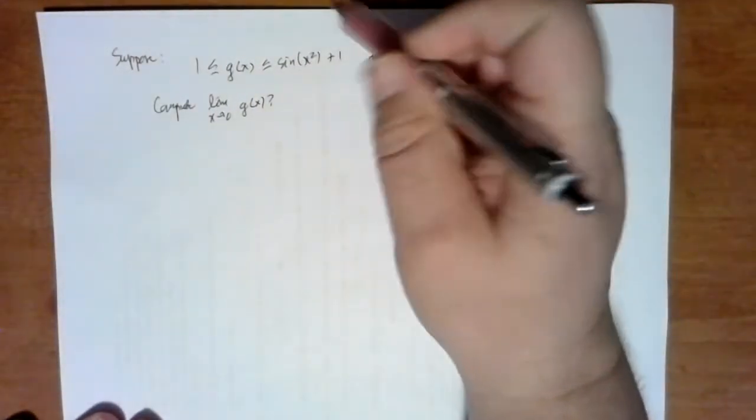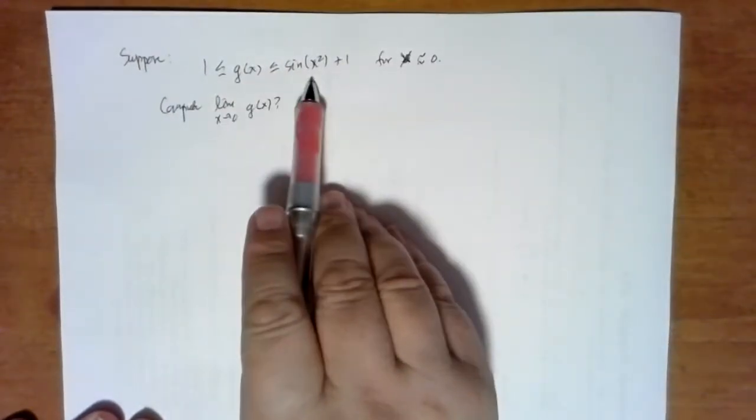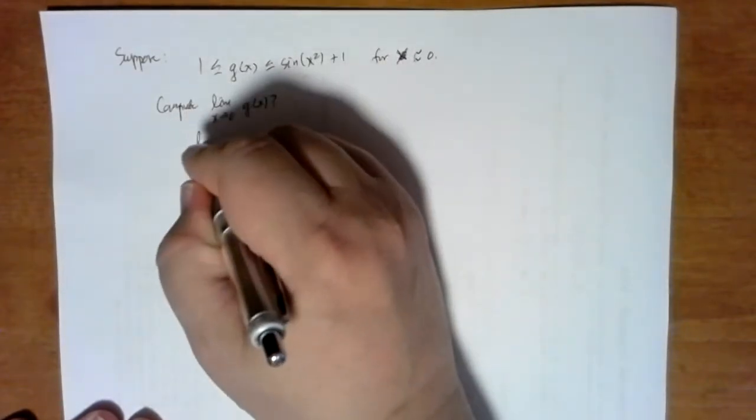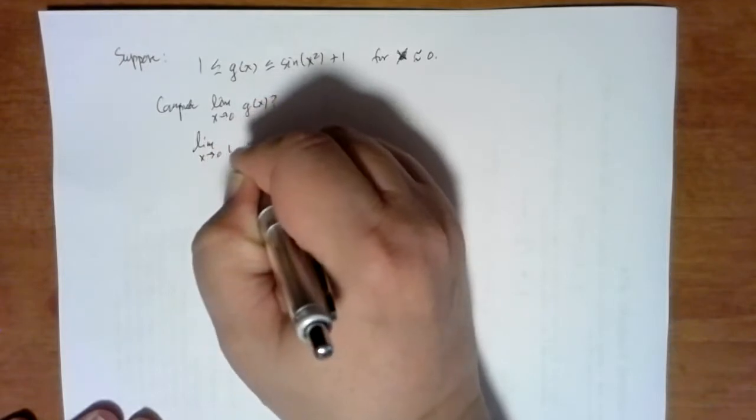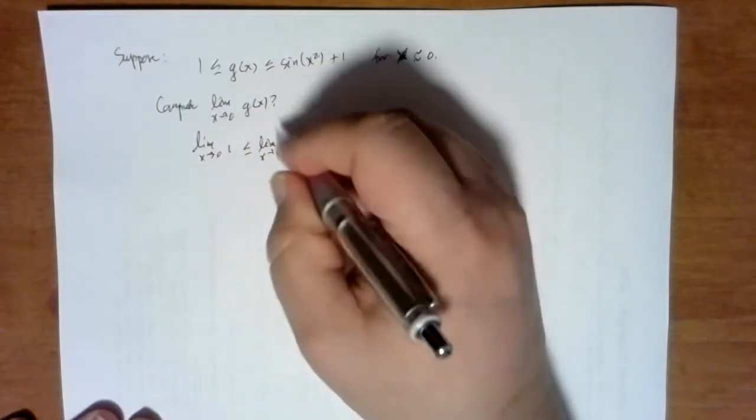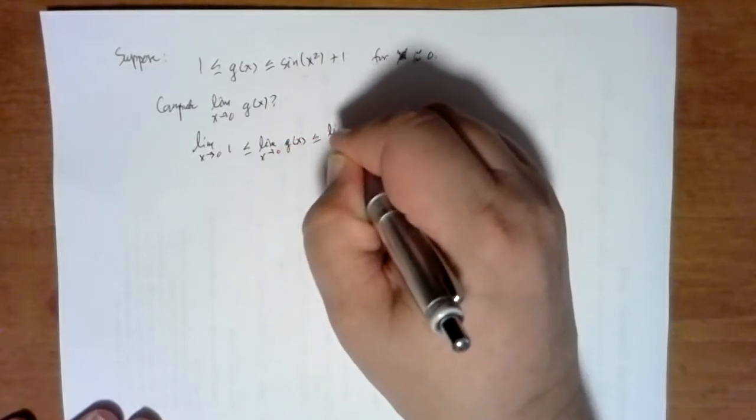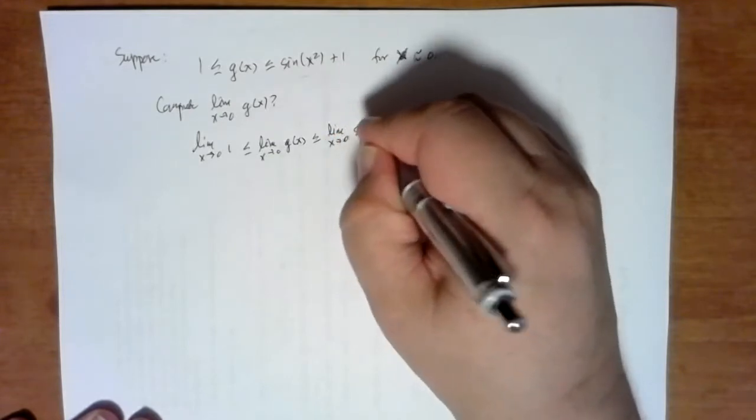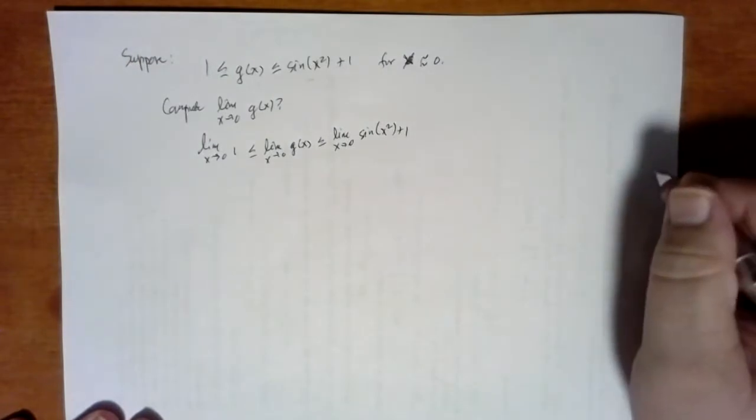Well, as you might guess, this is all set up for which theorem? The squeeze theorem. So the squeeze theorem says that you can go ahead and just pull down the limits of each of these, g of x. So this would be sine of x squared plus 1.